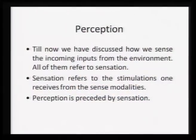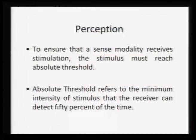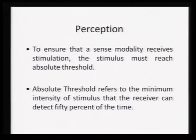Till now we have discussed how we sense incoming information from the environment — everything has to do with sensation. Sensation therefore refers only to the stimulation that one receives from the sense modalities. You have sense modalities designed to receive information from the external environment; impulses get transferred to certain areas of the brain. This entire process of sensation actually precedes perception. To ensure that the sense modality has received the stimulation, it has to reach a minimum threshold — the absolute threshold.